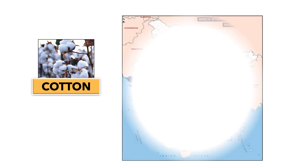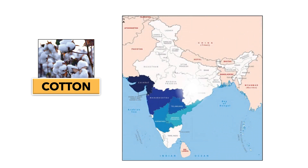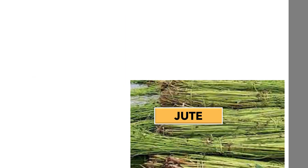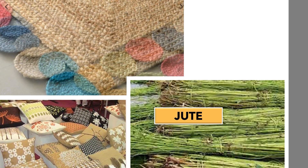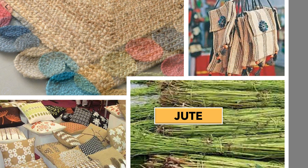Cotton is used for making cloth. It is mainly grown in Gujarat, Maharashtra, Telangana, Haryana and Karnataka. Jute is used for making bags and carpets, and it is mainly grown in West Bengal and Assam.